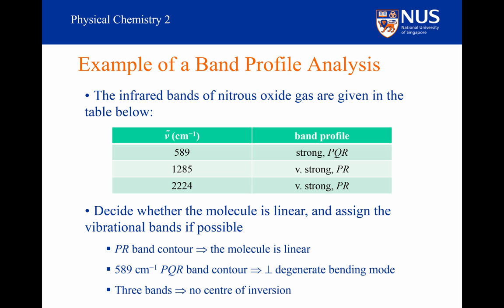What about assigning the bands to symmetric and asymmetric stretches? Well, as a general rule, asymmetric stretches occur at higher frequencies than symmetric stretches, and so the band at 1,285 wavenumbers is the symmetric stretch, and the band at 2,224 wavenumbers is the asymmetric stretch.